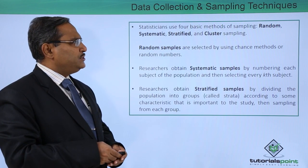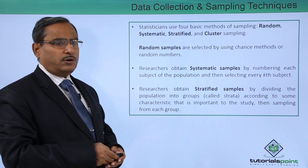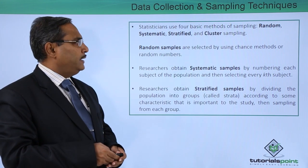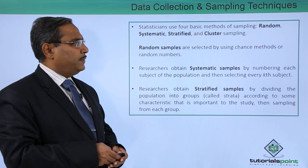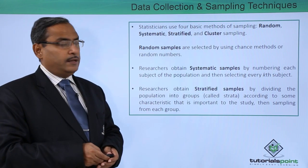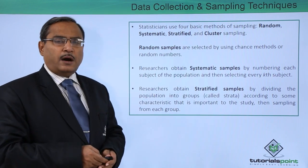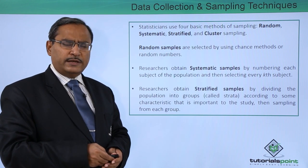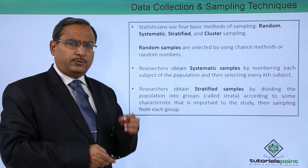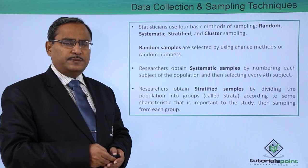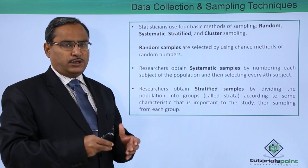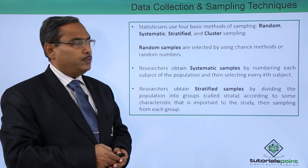Statisticians use 4 basic methods of sampling: random sampling, systematic sampling, stratified sampling, and cluster sampling. Whenever the population has a huge number of subjects and it is not feasible to interact with each and every subject, then we will be going for sampling. A sample is nothing but a collection of subjects taken from the population.